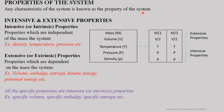Any characteristic of a system is known as a property. Characteristics such as pressure, temperature, volume, enthalpy, and entropy are all properties of the system. Properties are classified into two categories: intensive (also called intrinsic) properties, which are independent of the mass of the system — examples include density, temperature, and pressure — and extensive (or extrinsic) properties, which are dependent on the mass of the system, such as volume, enthalpy, entropy, kinetic energy, and potential energy.